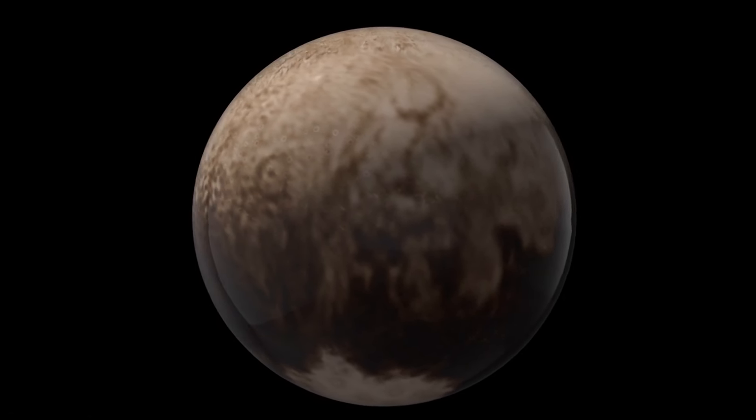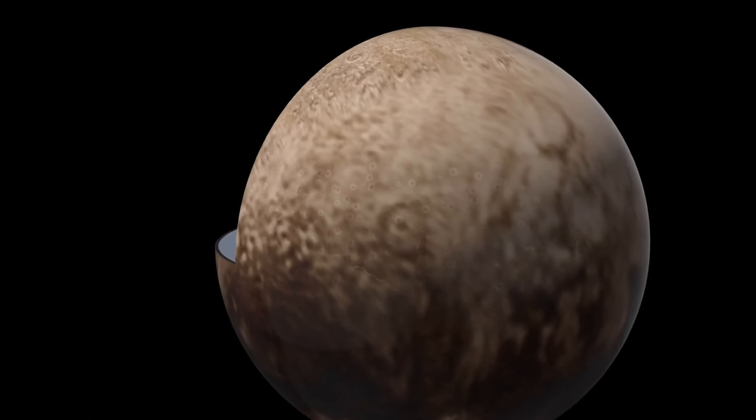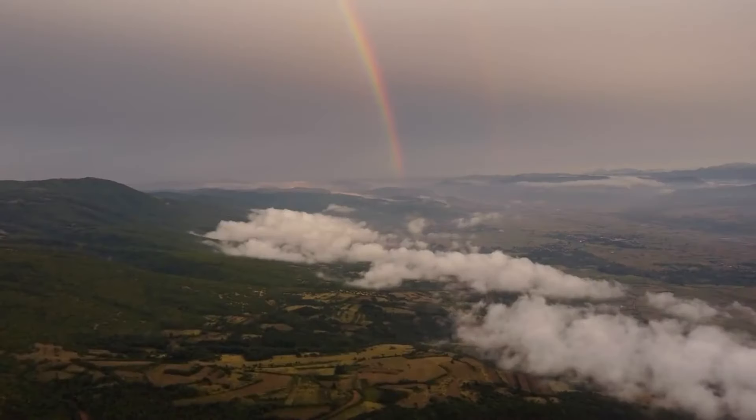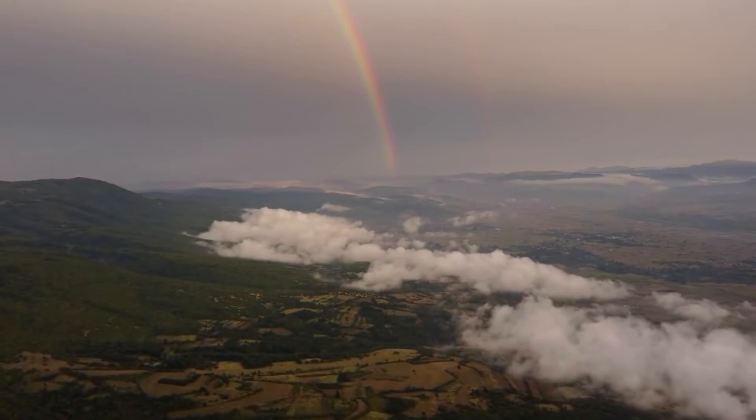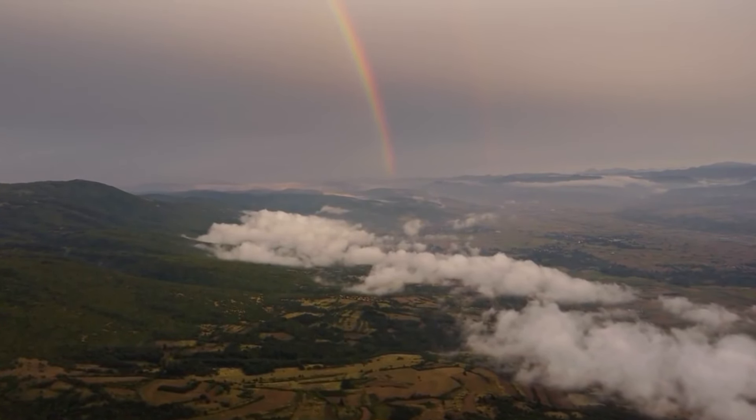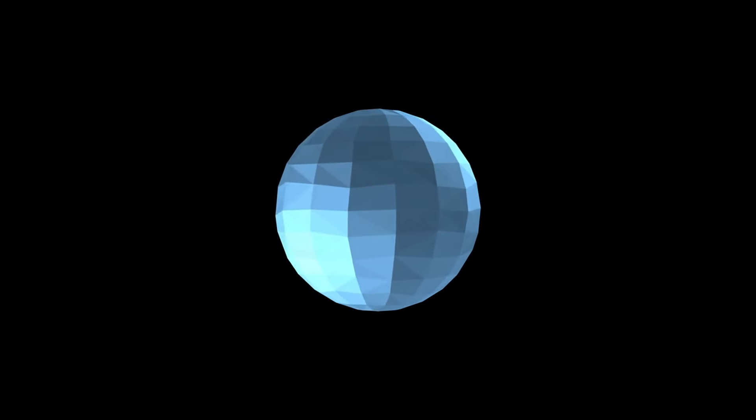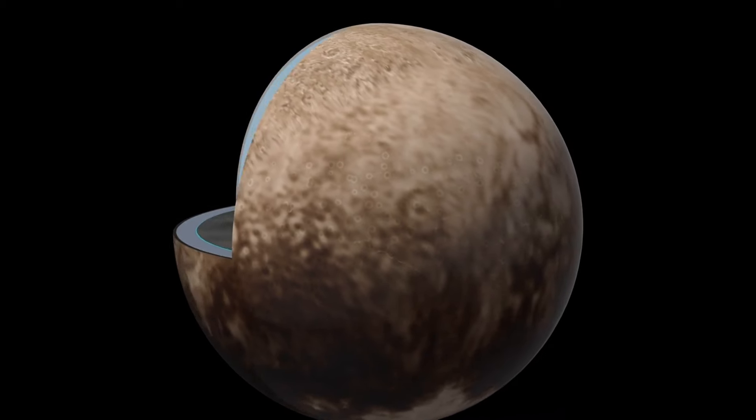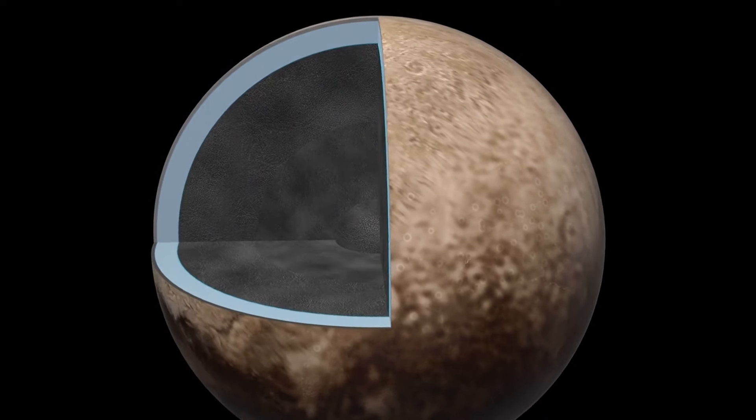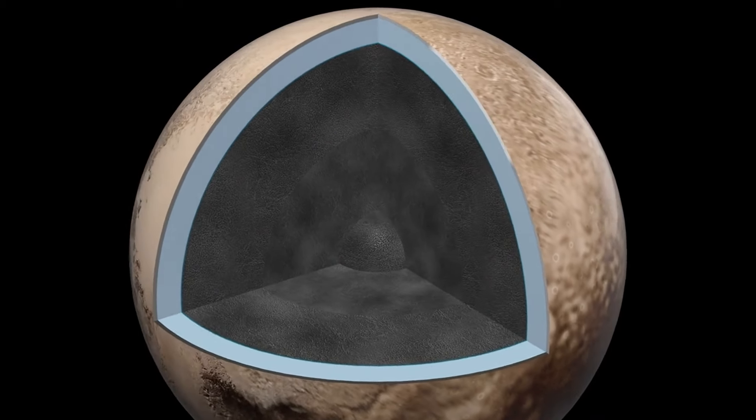Despite its thinness, Pluto's atmosphere is also capable of creating otherworldly phenomena. For instance, under the right conditions, it is possible that Pluto could experience phenomena similar to Earth's rainbows or halos. These would not be caused by liquid water but by ice crystals or perhaps even by particles of frozen nitrogen or methane. These delicate atmospheric effects further add to the mystique of Pluto, presenting a world that, while cold and distant, is also unexpectedly vibrant and active.